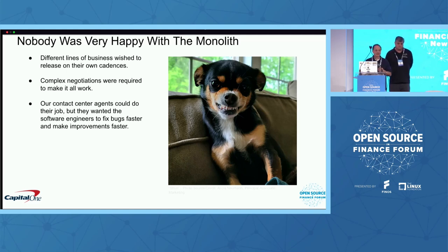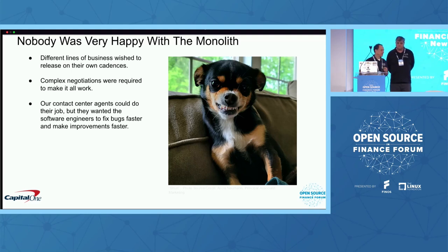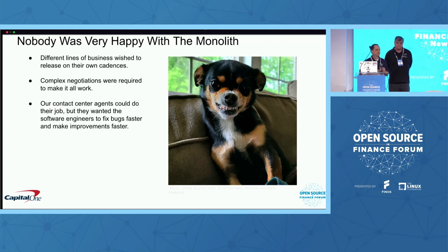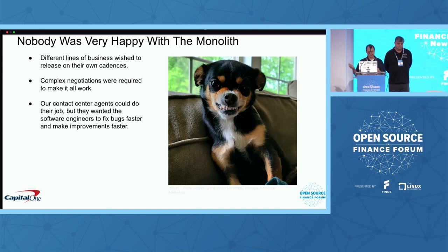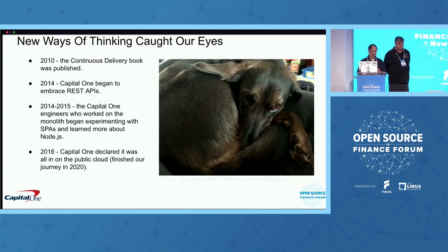We're in an industry that is highly regulated and those regulations can change quickly. At the same time, our agents have problems they need to solve — they might raise bugs with us. So if you're releasing one or two times a month, you really can't address your agents' needs, and sometimes it's very difficult to deal with quick regulatory requirements. So none of us were very happy with this.